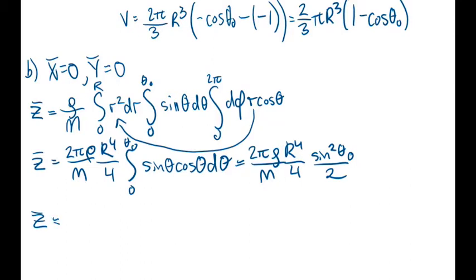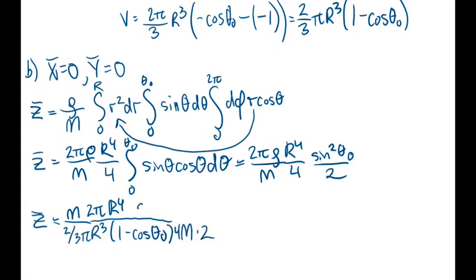So we'll have m over V, that's rho times 2pi r to the fourth over 4 times 2, and then up here we've got the sine squared theta naught.